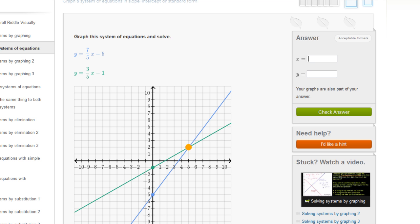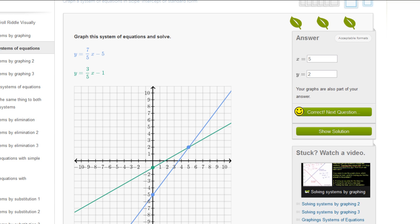And it looks like they intersect right at that point, right at the point x is equal to 5, y is equal to 2. So we'll type in x is equal to 5, y is equal to 2. And you could even verify by substituting those values into both equations to show that it does satisfy both constraints. So let's check our answer. And it worked.